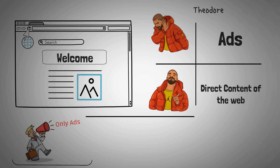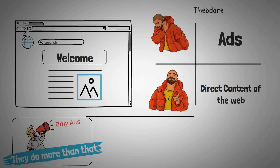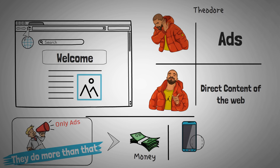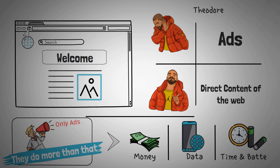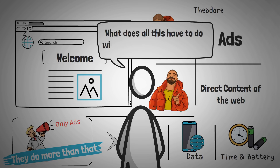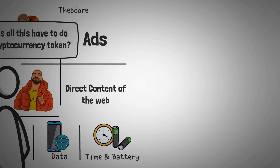Now while most internet users think that ads only interrupt their browsing experience, this isn't exactly true. Ad pop-ups also cost you money. Statistics show that third-party trackers and ads consume up to 50% of your mobile data, as you can tell by the way that the ads load first and then the content loads. And not only that, your phone's battery life gets affected by up to 20%. Now you might be wondering what all of this has to do with a cryptocurrency token.